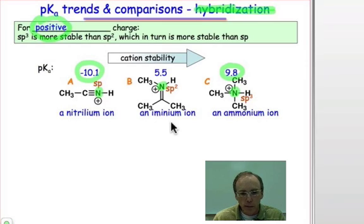Positive charge, being least stable in the sp form, most strongly promotes the dissociation of this proton, reflecting that high acidity, the very low negative pKa value.